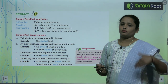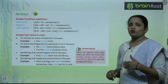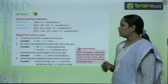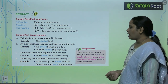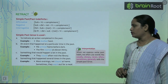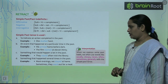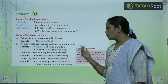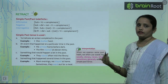Simple past is also used when an event happened at a particular time in the past. For example: 'We arrived home before dark' and 'The film started at 11:30.' It is also used for something that would happen repeatedly in the past — for example: 'They would often visit the library.' Something that happened several times in the past: 'Most evenings we stayed at home.'